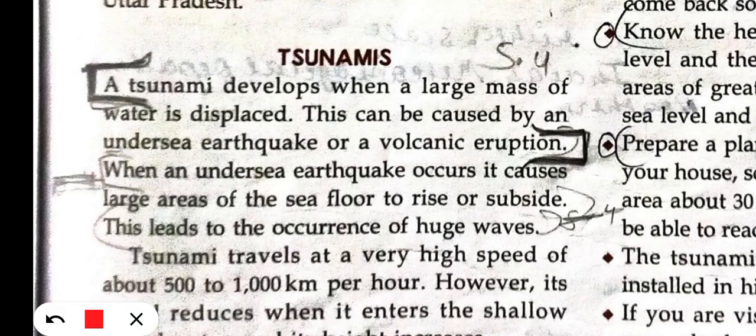Tsunamis. When do they develop? Tsunamis develop when there are large water displacements in seas and oceans. When there are large water displacements, what happens? Tsunami. Why will this happen?